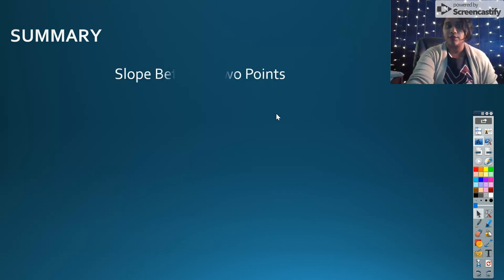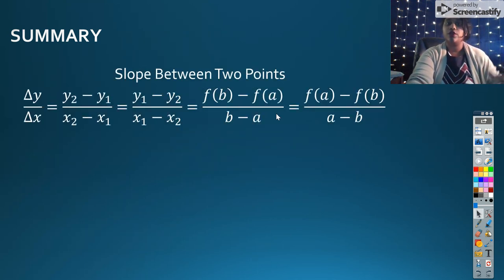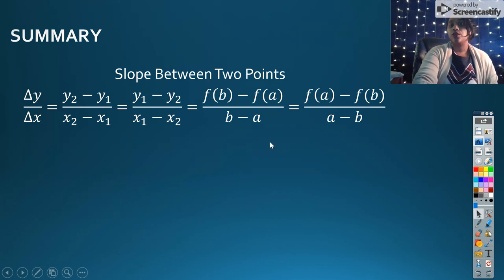So here's a real quick summary. The slope between two points you all know is this formula. The more appropriate formula that we're going to use in calculus is this formula right here that I'm circling with my cursor. We're going to move past delta Y, delta X, and we're going to move into change in function value over change in my independent variable.